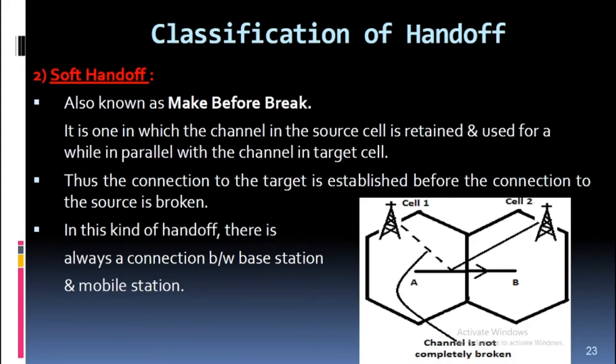Soft handoff, also known as 'make before break,' is one in which the channel in the source cell is retained and used for a while in parallel with the channel in the target cell. Thus the connection to the target is established before the connection to the source is broken.